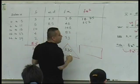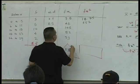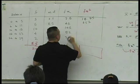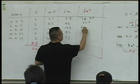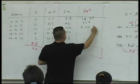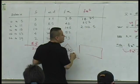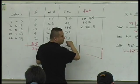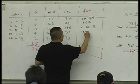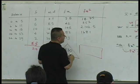14.5 times 145. What's that? 2,000 what? Okay. 20.5 times 82. What is it? 16.81. 26.5 times 53. What's that?